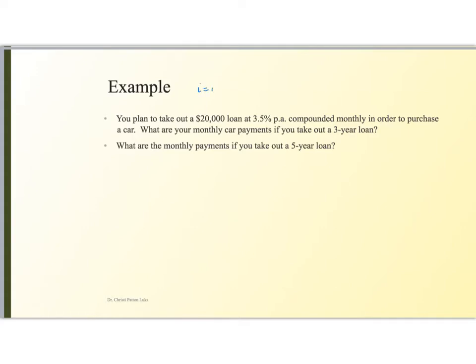In this case, for all of these problems, I is 0.035, that's per annum. M is 12 times per year, and my principal value is 20,000. I'm looking for A. Here I'm looking for A using 36 monthly payments. Here I'm looking for A using 60, 5 times 12 monthly payments.